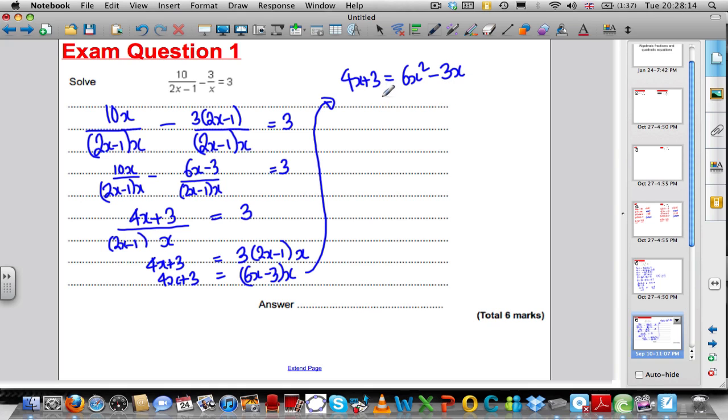I've got a quadratic equation, I need to make it equal to 0, subtract 4x, subtract 3 off both sides, so you get 0 is equal to 6x squared, minus 3x, minus another 4x is minus 7x, and you take 3 off and you end up with negative 3.